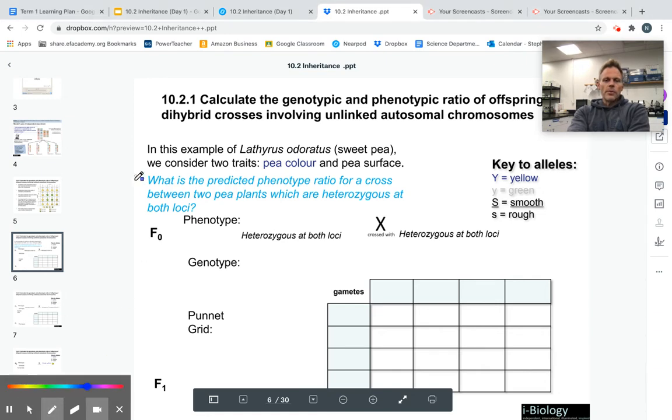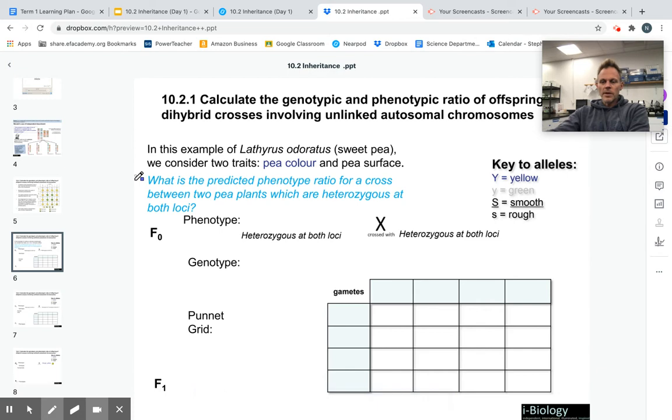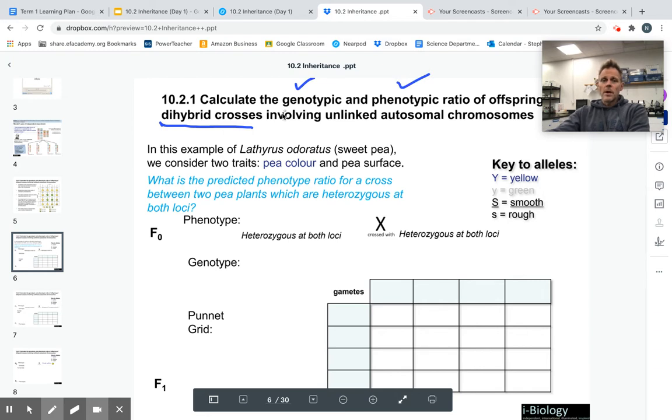So 10.21 wants us to be able to do something with dihybrid crosses. We need to calculate genotype and phenotype ratios, which we've done before. But this time, instead of mono, which means one, we're going to use di, that means two cross.